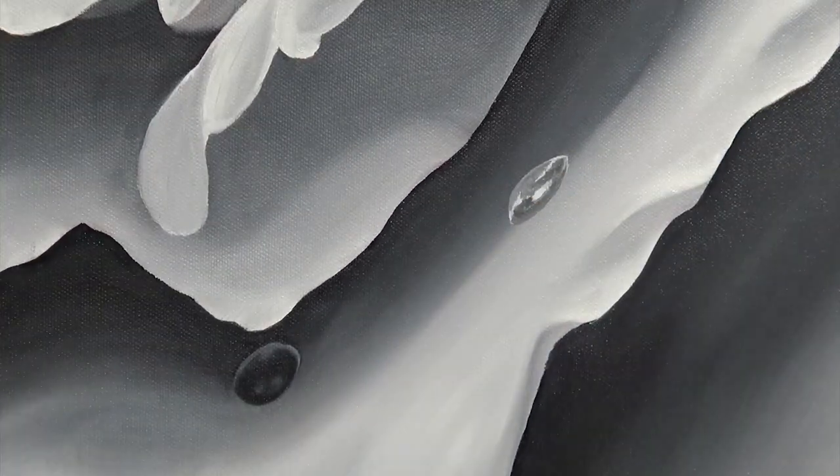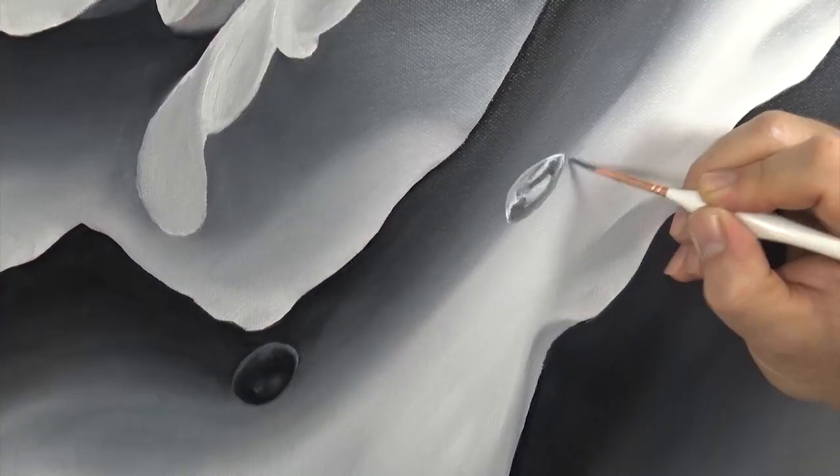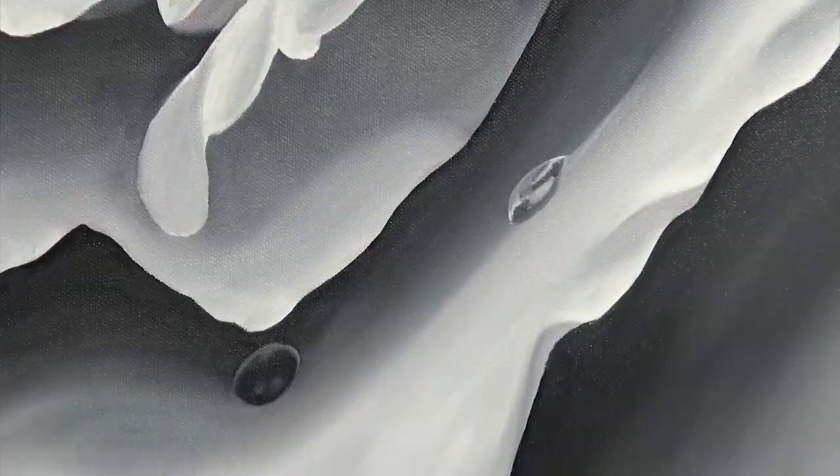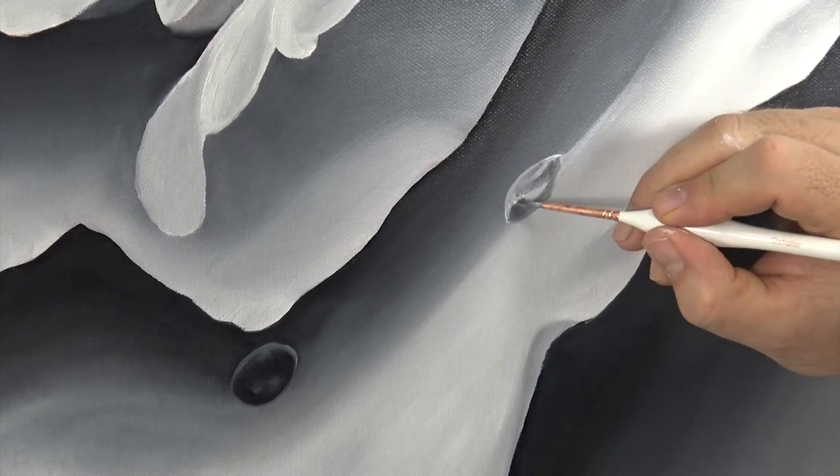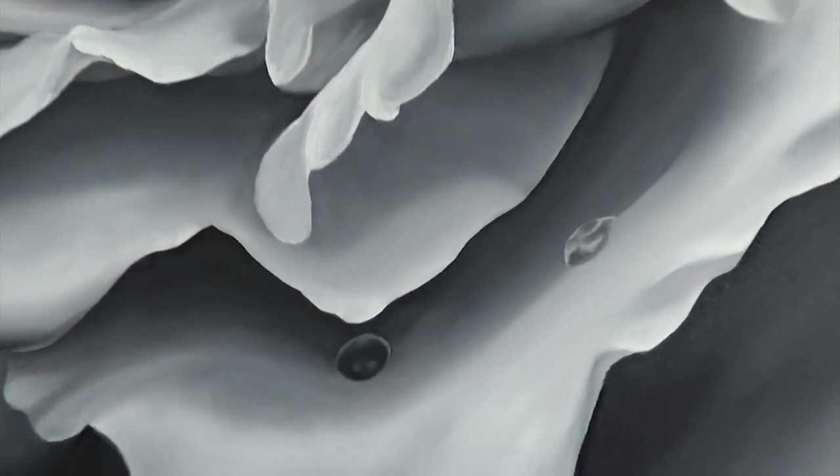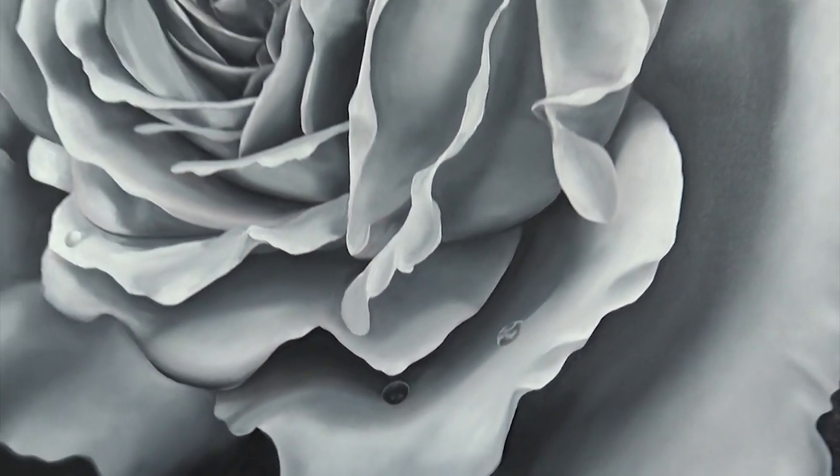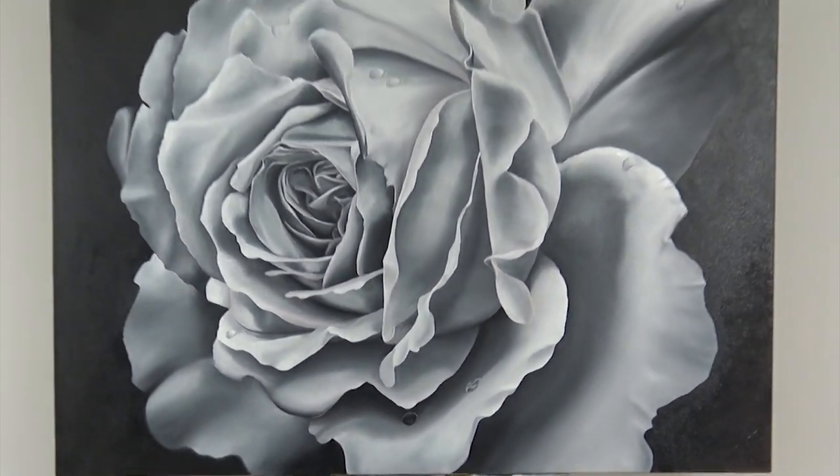Here we have a droplet not in shadow but not in highlight either, so it is handled differently again. It is reflecting light and acting as a mirror, so some of the petals might appear in its surface. Putting in the time to create little details like this adds much to a work.